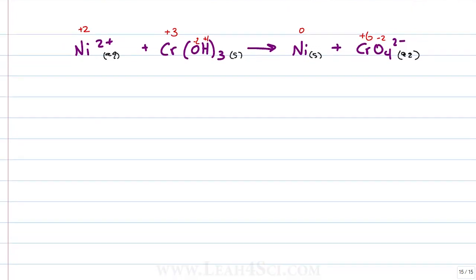We have our oxidation numbers, let's use it to figure out what got oxidized and what got reduced. Nickel +2 went down to 0, or we can say nickel was reduced from 2 to 0 for the reduction half reaction.